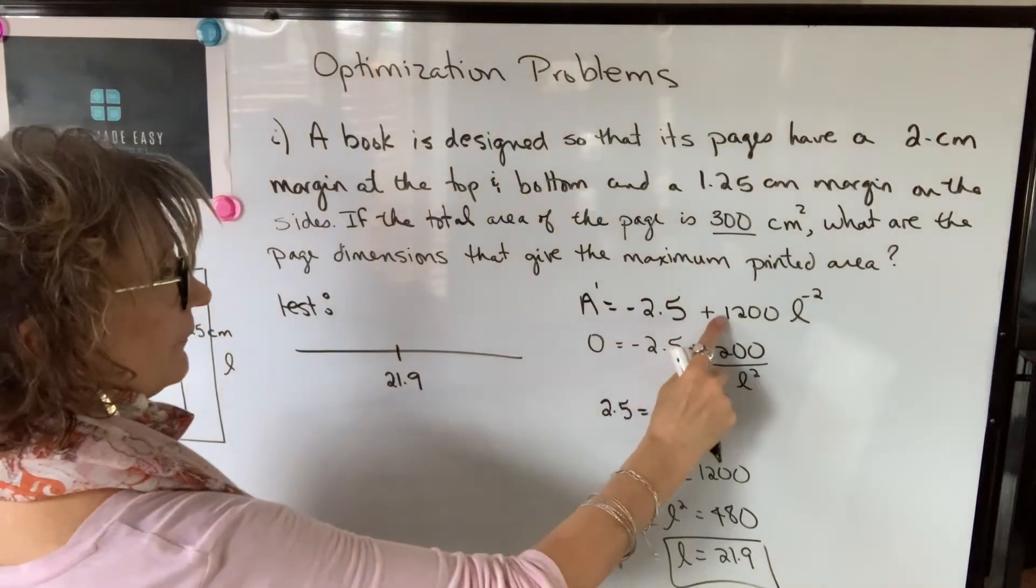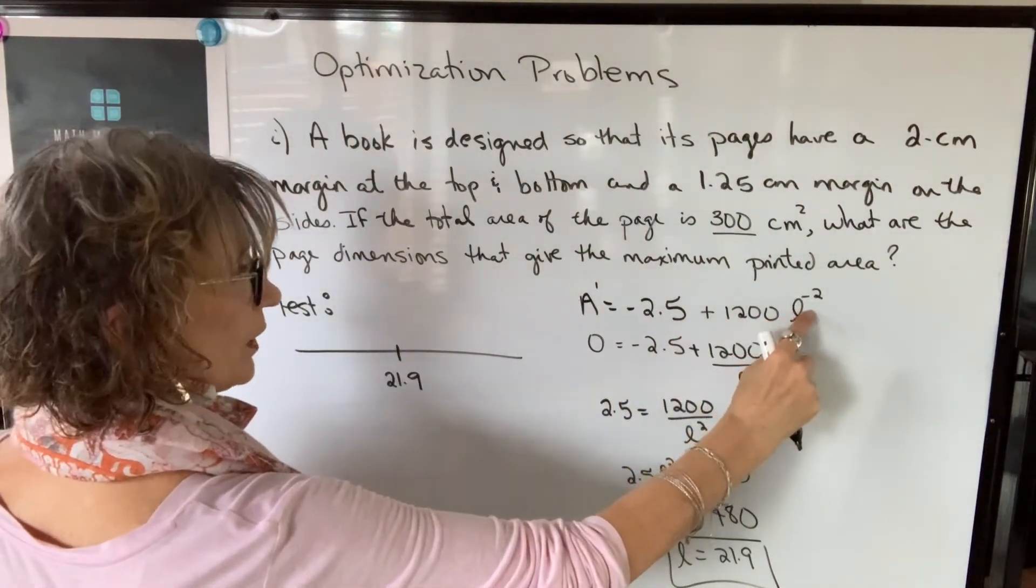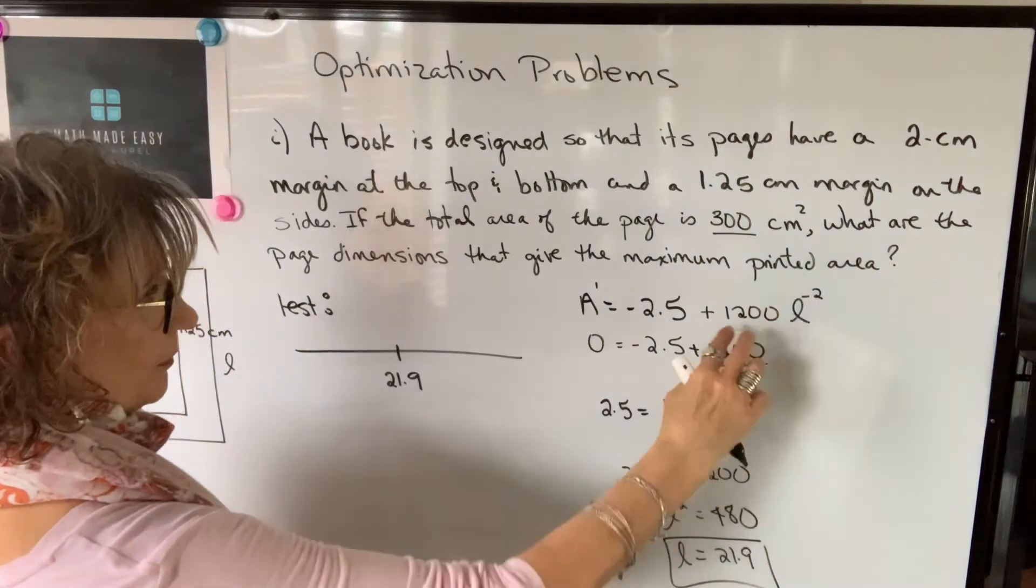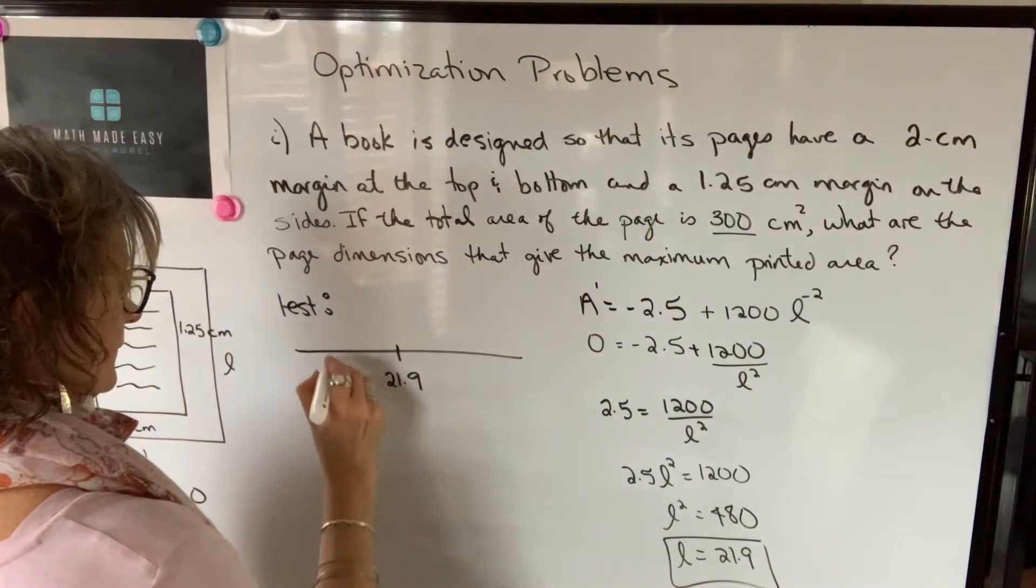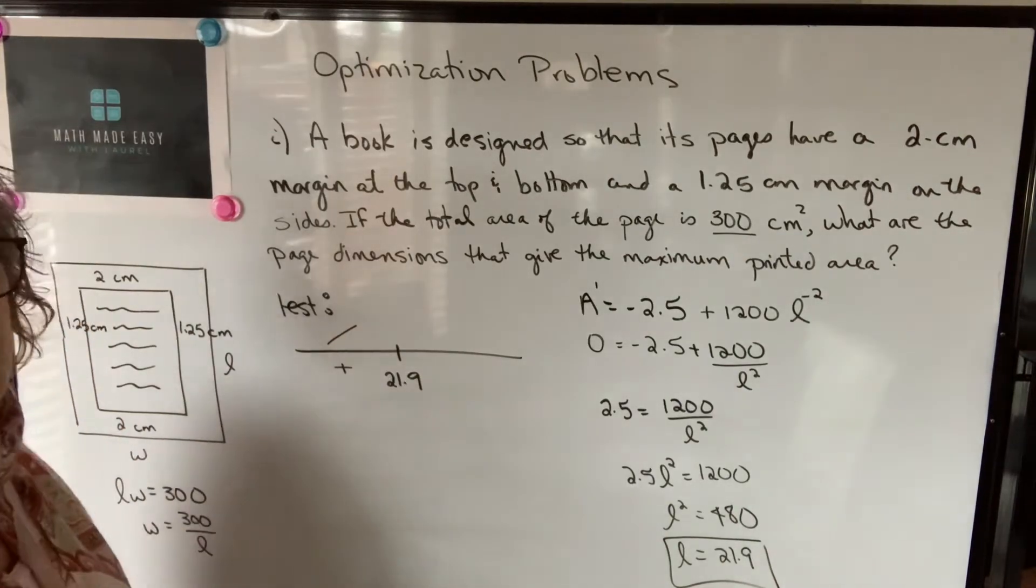Negative 2.5 plus 1200 times 1 to the negative 2, that would be 1200 over 1, which is positive. 1200 minus 2.5, that's positive. So the function is increasing in that interval.